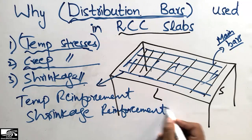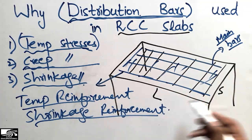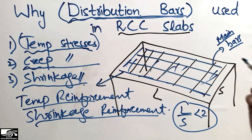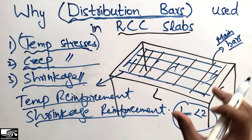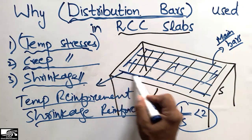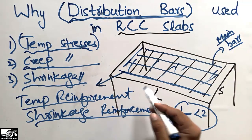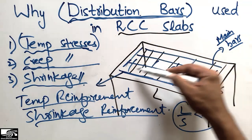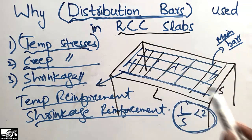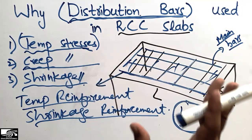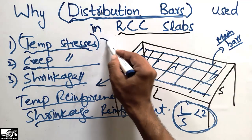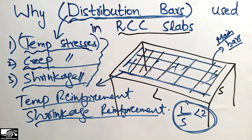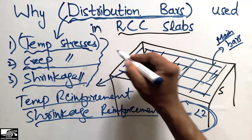However, in a two-way slab — in which the longer to shorter span ratio is less than 2 — we provide both main bars and distribution bars, but their function is to take load in both directions, since the longer direction also carries more load. So distribution bars are provided on both sides — the longer side as well as the shorter side — in a two-way slab. In a one-way slab, while there is no structural need, we still provide distribution bars to resist these three types of stresses.